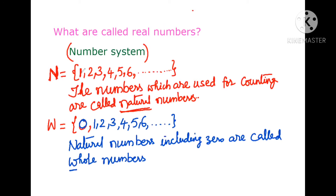The smallest natural number is 1, but we cannot decide the largest natural number, because if we write any natural number we can always write one more than it. The smallest whole number is 0, and the largest we also cannot write. So W = {0, 1, 2, 3, 4, 5, 6, ...} up to infinite numbers — this set is called whole numbers.